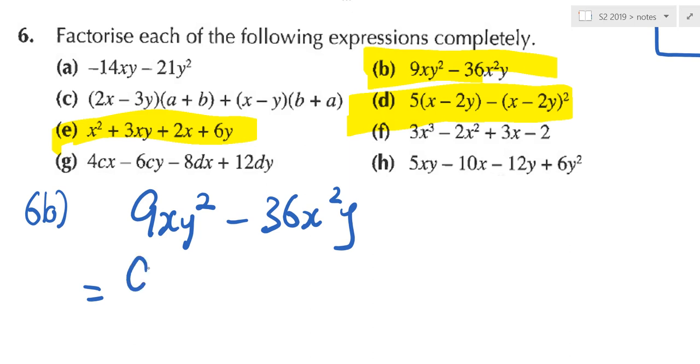What about x and x square? There's an x here, there's an x square here. So I can take out what? X. There's a y square, there's a y here. I can take out 1y, 1x.